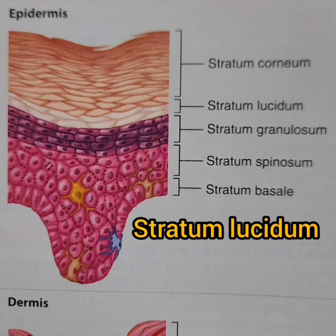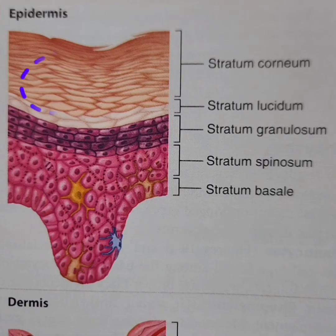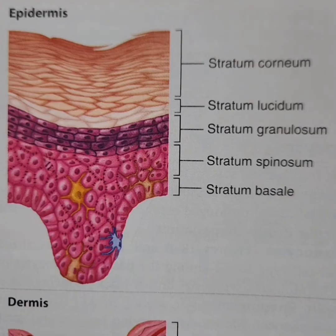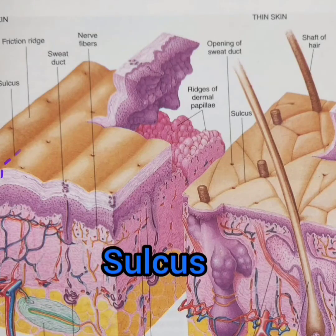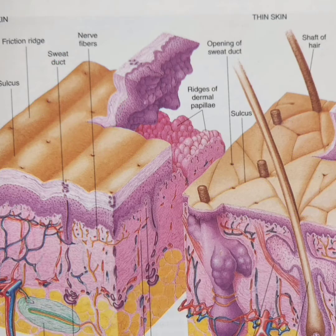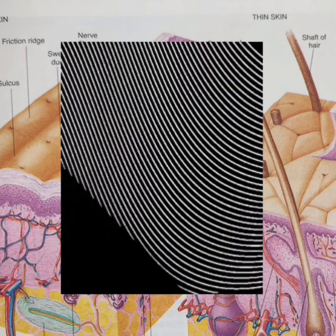Several layers of flake-like dead cells along with a dense network of keratin make up stratum corneum. Though this layer is dead, it still maintains the structural integrity of sulci and frictional ridges on the skin surface, which are best seen in thick skin and are responsible for fingerprints.